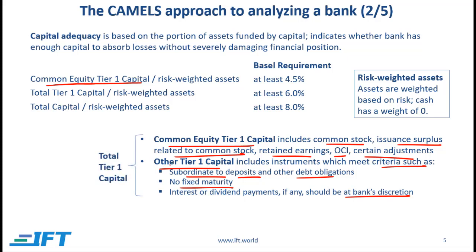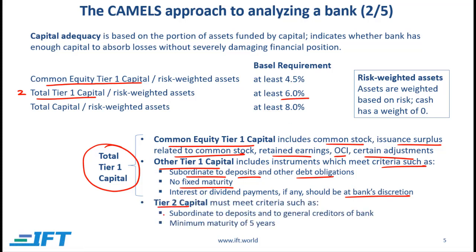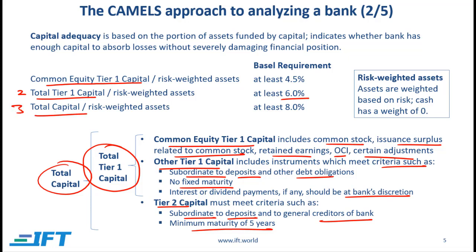Common equity tier one capital plus other tier one capital equals total tier one capital, which must be at least 6% of risk-weighted assets according to Basel III. Tier two capital must be subordinate to deposits and general creditors, with a maturity of at least five years. Combining total tier one capital with tier two capital gives total capital, and the Basel III requirement is that total capital should be at least 8% of risk-weighted assets. The higher these ratios, the better the capital adequacy rating.